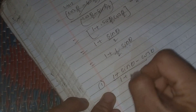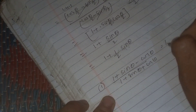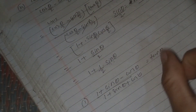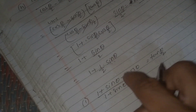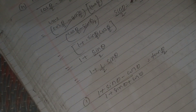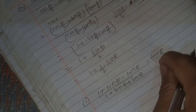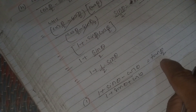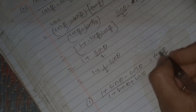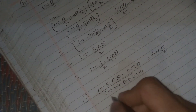Upon 1 plus sin theta, plus cos theta, equals tan theta by 2. I number, tan theta by 2, sin theta, cos theta, sin cos theta probability. Theta by 2, multiple angle theta by 2.